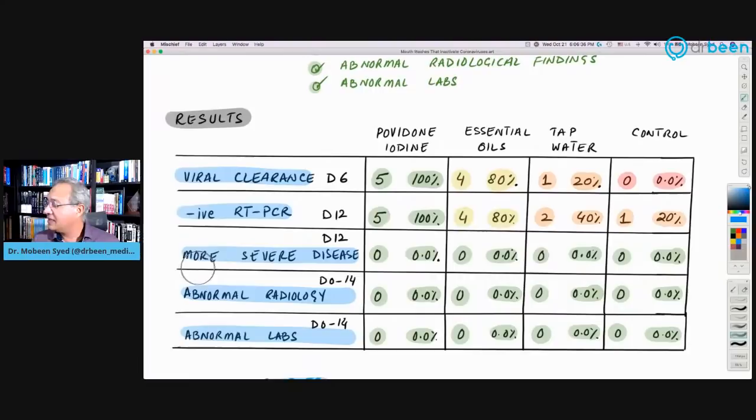Two who were doing water only gargles, 40%. And these are all gargles. So they said that we gave them the substance and then we asked them to tilt their head backwards and gargle for 30 seconds. And control by day 12, one person had become RT-PCR negative. So that is very, very interesting. Then more severe disease, none of them.